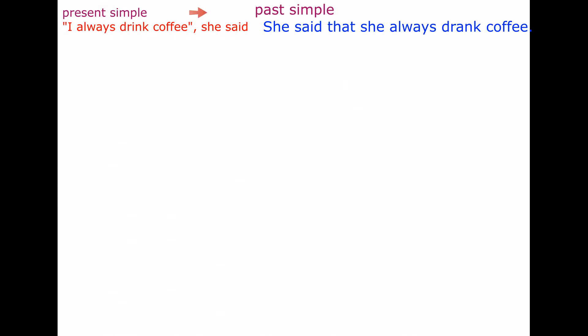Let's have a look. Present simple: 'I always drink coffee,' she said. She said that she always drank coffee.